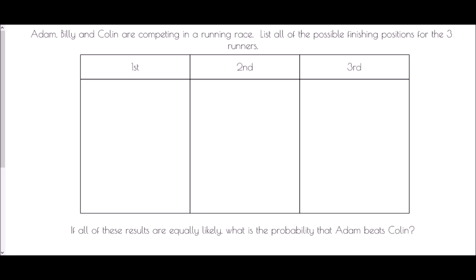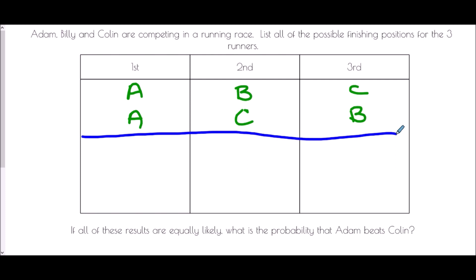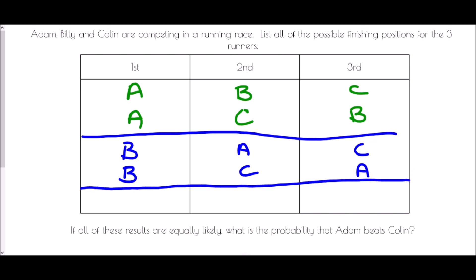In our last question, Adam, Billy, and Colin are competing in a running race. We want to list all possible finishing positions. If Adam comes first, Billy could be second and Colin third, or Colin could be second and Billy third. If Billy wins, Adam could come second and Colin third, or Colin could come second and Adam third.